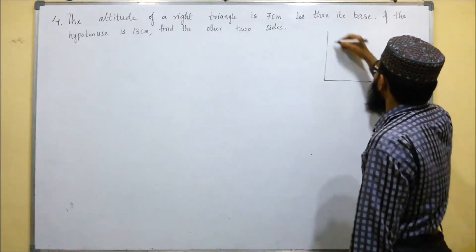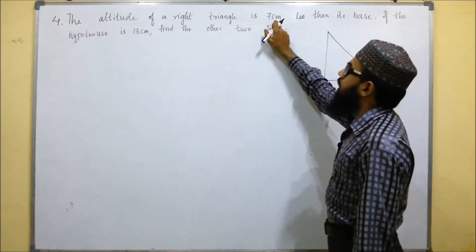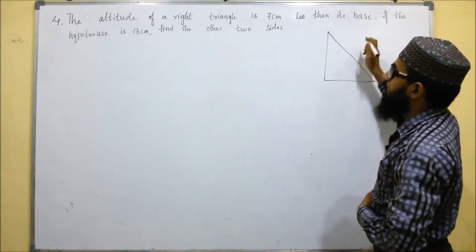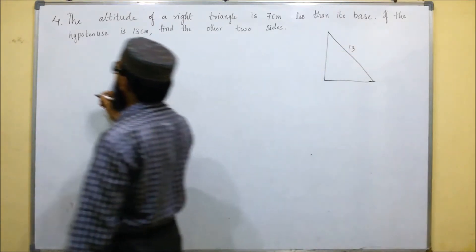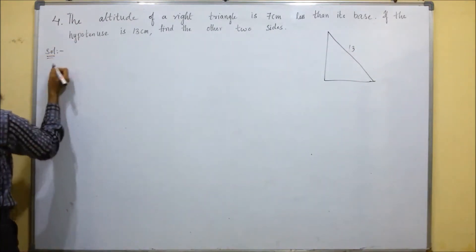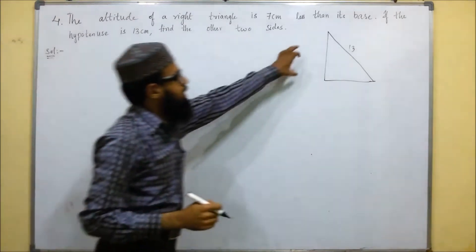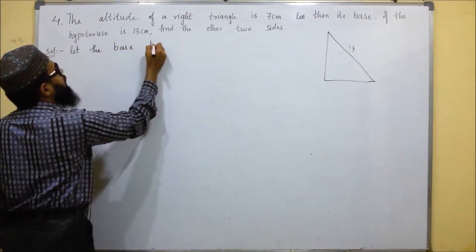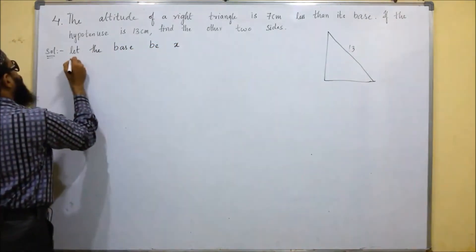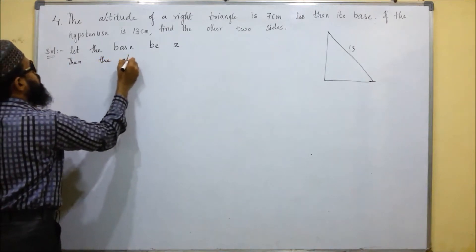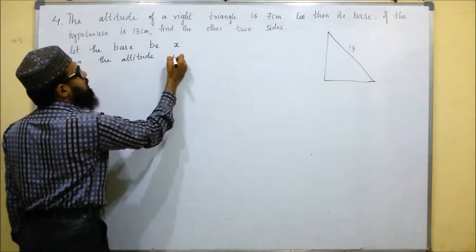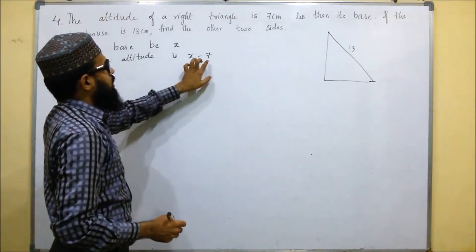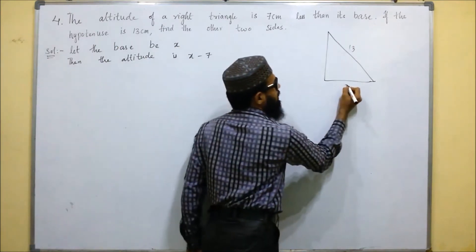Let us draw that right triangle. They have said the altitude is 7 less than the base. We don't know the base, but the hypotenuse is given as 13 centimeters. So let the base be x. Then the altitude will be x minus 7, because the altitude is 7 less than the base.